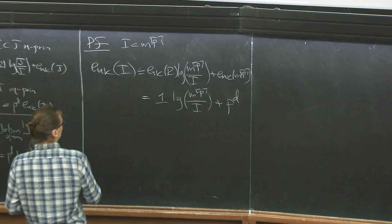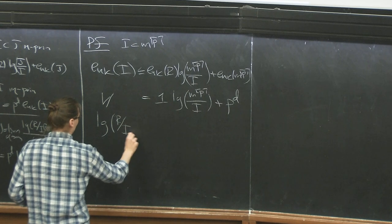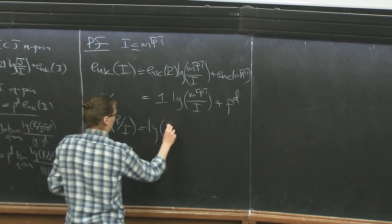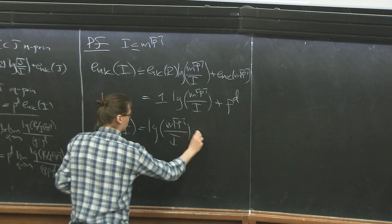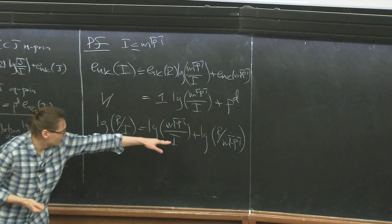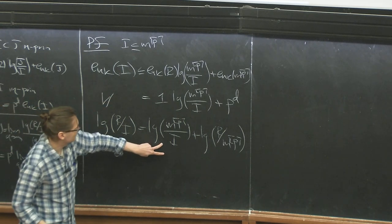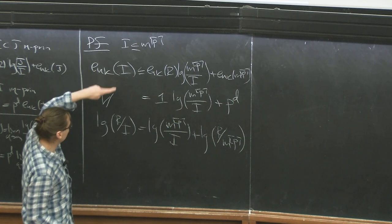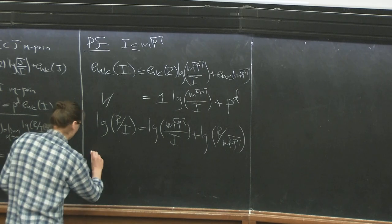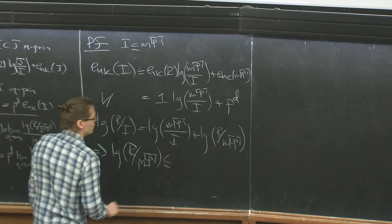We also know that Hilbert-Kunz multiplicity of i is ≥ the colength, which is length(r/i). We can write length(r/i) as length(m^[p]/i) + colength(m^[p]). So the same length appears on both sides of the inequality, and comparing the two chains implies that length(r/m^[p]) ≤ p^d.